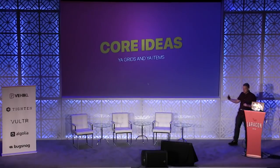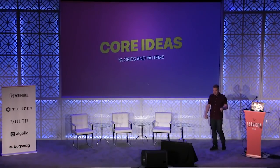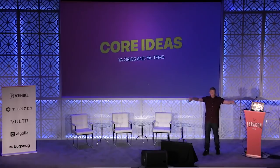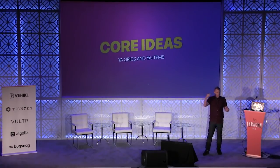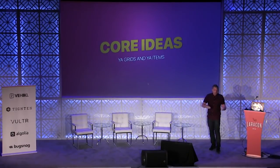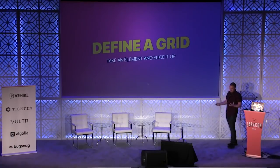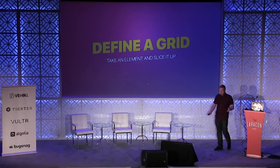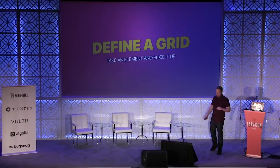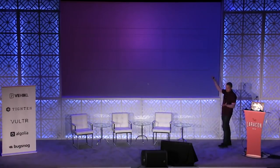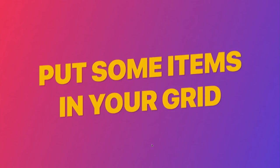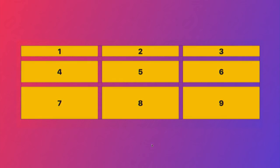CSS Grid is a brand new layout system in CSS. It's not a framework or a library — it's a new addition to the language that allows us to quickly create flexible two-dimensional, meaning columns and rows, layouts. The idea behind CSS Grid is that you have a grid, which is a containing element, and then direct children inside of that grid, which are called grid items. You take an element, define it as a grid, slice it up into rows and columns, and by default items take up one spot.